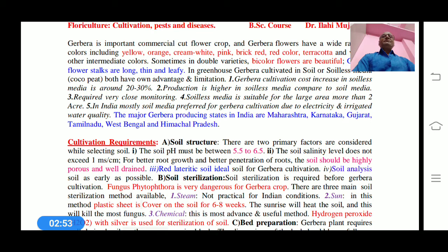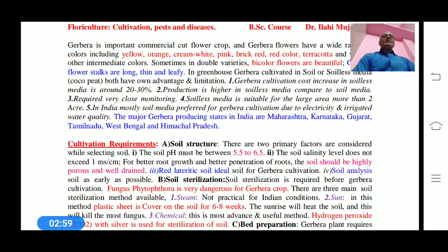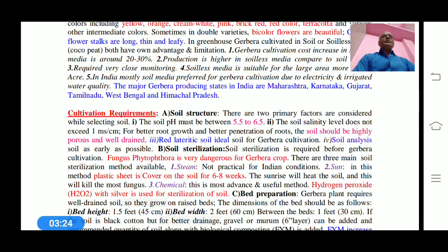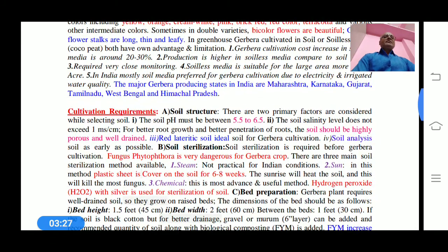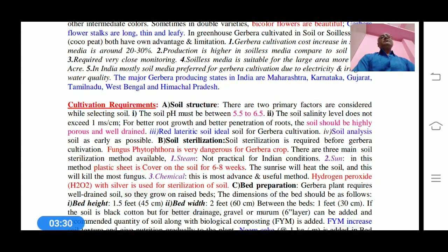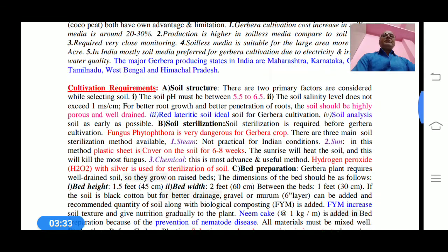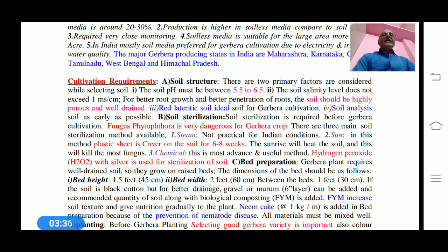It requires very close monitoring, and soilless media is suitable for large areas of more than two acres. In India, mostly soil media is prepared for gerbera cultivation due to electricity and irrigated water quality. The major gerbera producing states in India are Maharashtra, Karnataka, Gujarat, Tamil Nadu, West Bengal, and Himachal Pradesh.